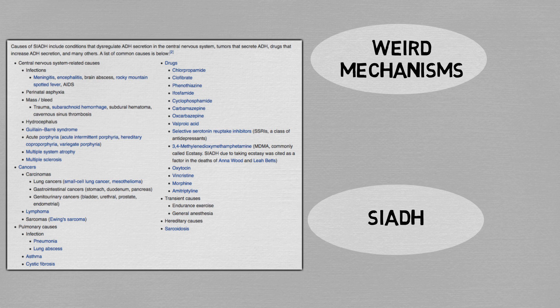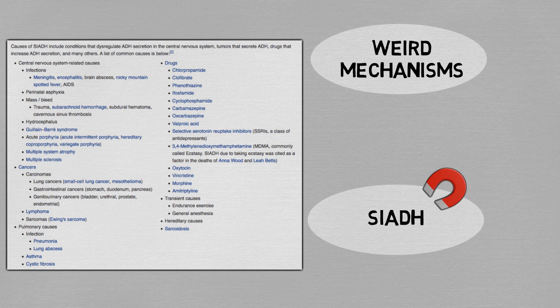When we see hyponatremia, one of our first thoughts is SIADH, and I think it comes to mind so fast because among the causes of hyponatremia it's the one with the most simple and direct mechanism. But SIADH is a diagnosis of exclusion, so unless you diligently go through the differentials, you can't really assign blame to it.